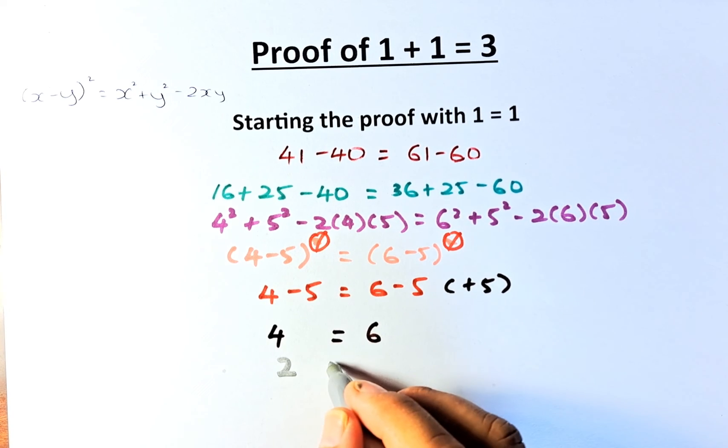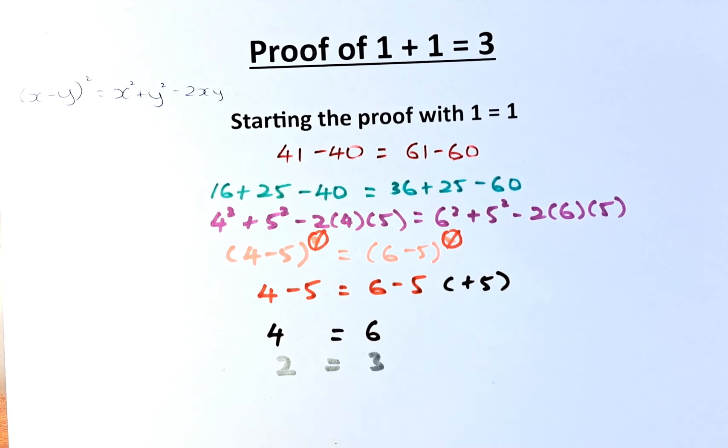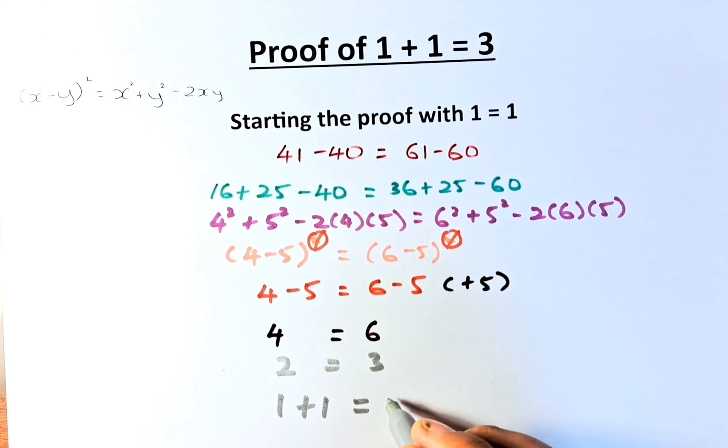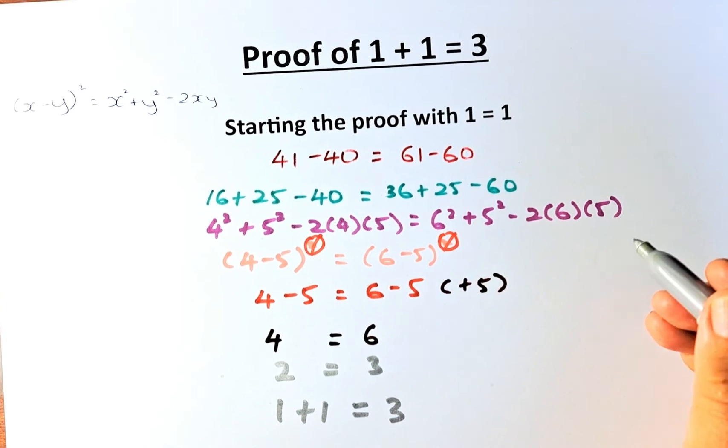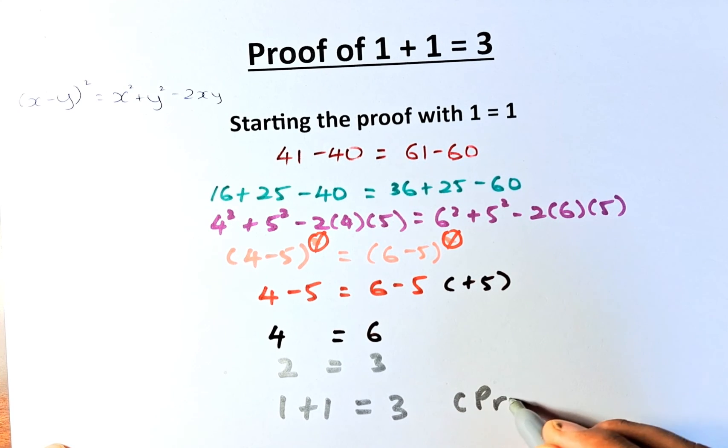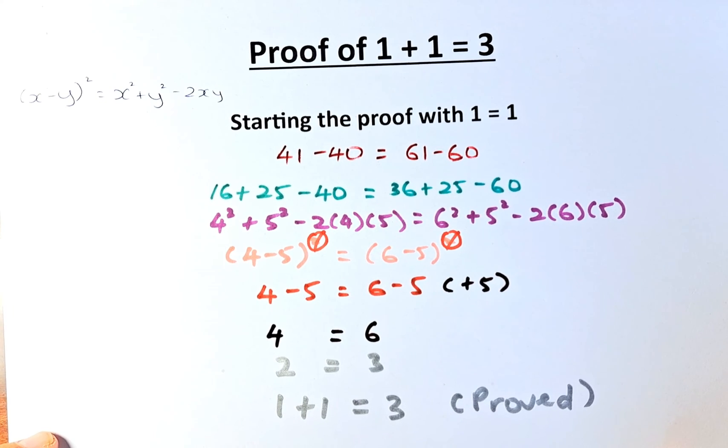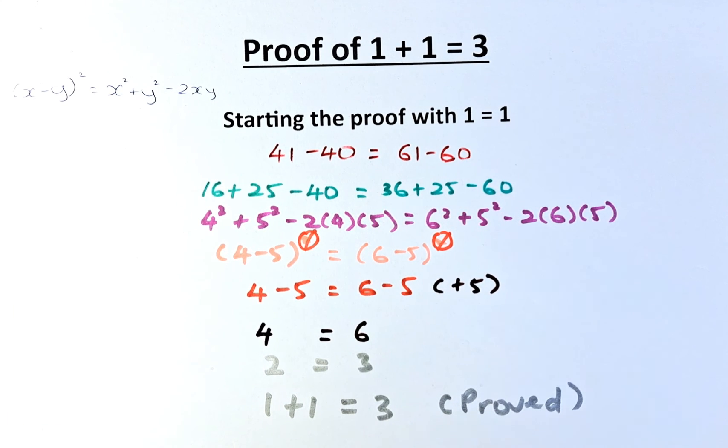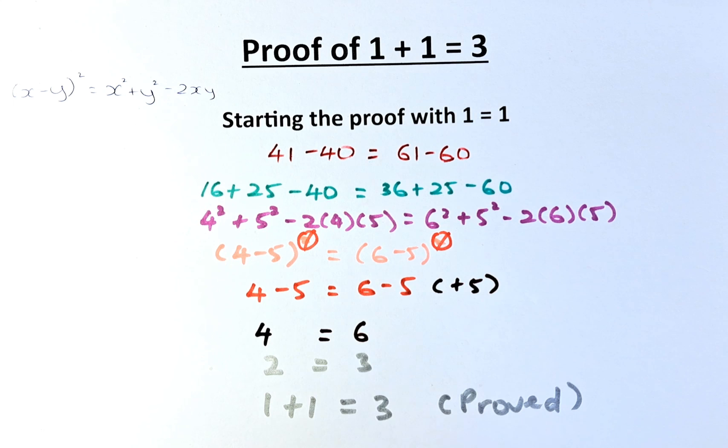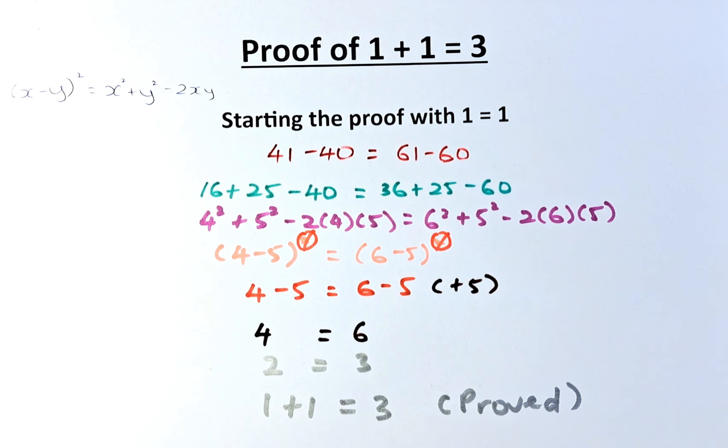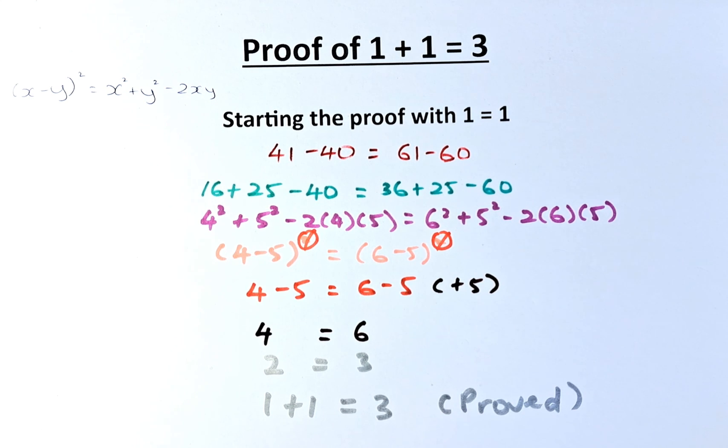4 equals 6 means 2 equals 3. And 2 is the same as 1 plus 1, and that equals 3. That's what we proved. So we have proved that 1 plus 1 equals 3. As I said before, there is some error made in the assumption. If you can point out that mistake, let me know. Write it in the comment section and I hope you enjoy this video. Cheers everyone and have a good day.